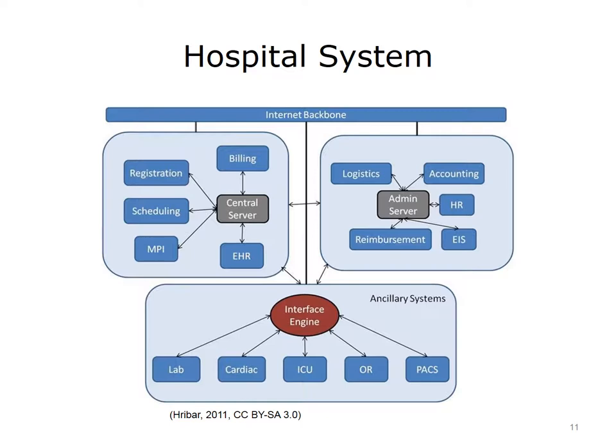Along the bottom are the many ancillary systems. These include laboratory information systems, systems used for monitoring and testing cardiac conditions, systems used in the intensive care unit, or ICU, and in operating rooms, or ORs, and the PACS systems used for imaging. Because there are so many systems that need to interface with other ancillary systems and the other healthcare and administration systems, the ancillary systems commonly connect to an interface engine, which in turn connects to all the other systems. Finally, all the groups of systems also connect to the internet for external operations, such as communicating medical data to and from other institutions, and connecting to outside systems for reimbursement.